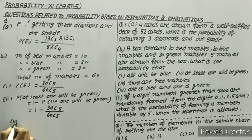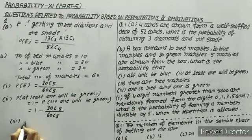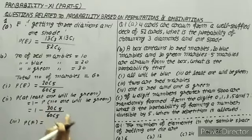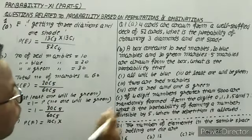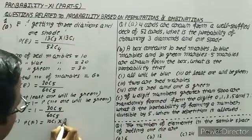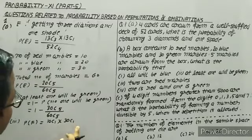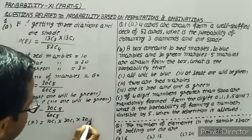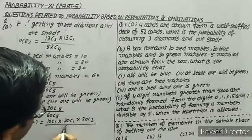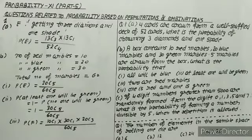Now the third part: one is red and one is green. Let F be the event. One red means 10C1, one green means 30C1. We have to select 5 marbles altogether, so 2 are accounted for, meaning 3 must come from blue: 20C3. Total outcomes are 60C5. So the probability is 10C1 × 30C1 × 20C3 / 60C5. This is the answer for this part.